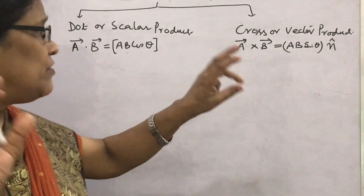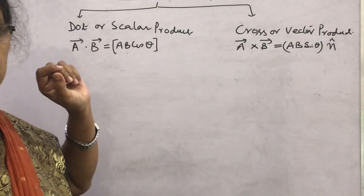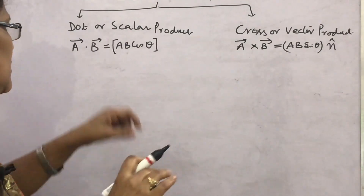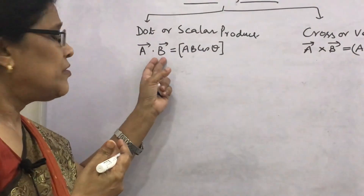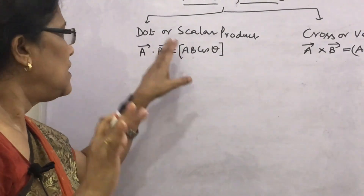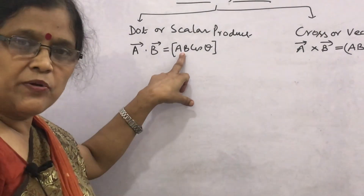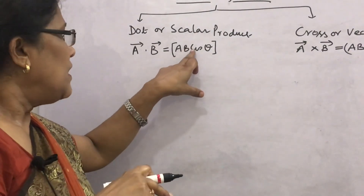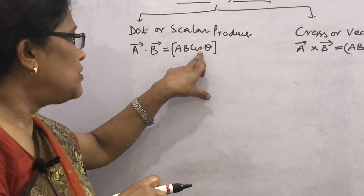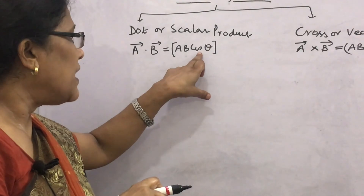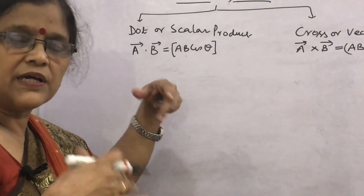Today we will learn about dot or scalar product. The dot product of two vectors is the multiplication of the magnitudes of one vector and the other vector, also multiplied by the cosine of the angle between them. The whole product ab cosθ is a scalar.